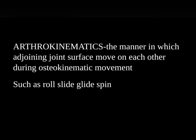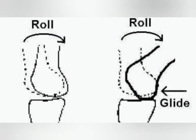If we are talking about arthrokinematics, it refers to the manner in which the adjoining joint surfaces move on each other during osteokinematic movement. When you see an osteokinematic movement, there will be an arthrokinematic movement. The joint movement involves roll, slide, glide, and spin.